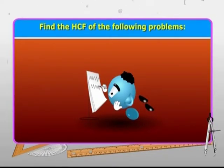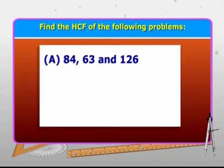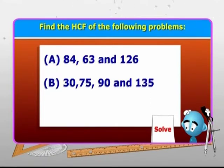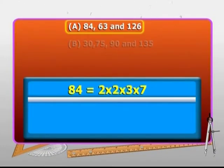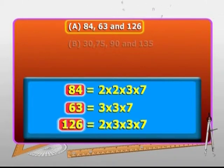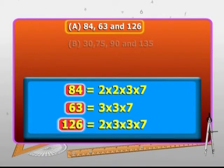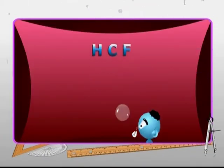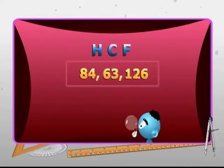Let's find the HCF of: A) 84, 63 and 126. B) 30, 75, 90 and 135. In part A, first find the factors of 84, 63 and 126. The factors of 84 are 2, 2, 3 and 7. Factors of 63 are 3, 3 and 7. And the factors of 126 are 2, 3, 3 and 7. So, the HCF of 84, 63 and 126 is 3 multiplied by 7, which is 21.